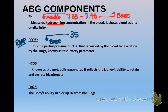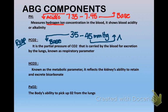Your pCO2 is your respiratory component. It is the partial pressure of carbon dioxide carried by the blood for excretion by the lungs, known as your respiratory parameter. Less than 35 is alkaline, and the normal range is 35 to 45 millimeters of mercury. pCO2 is considered the acid side.